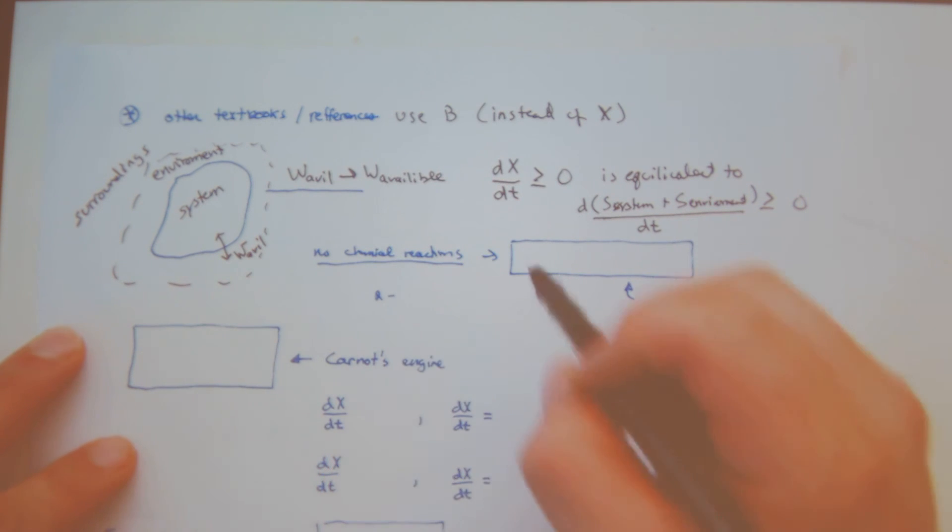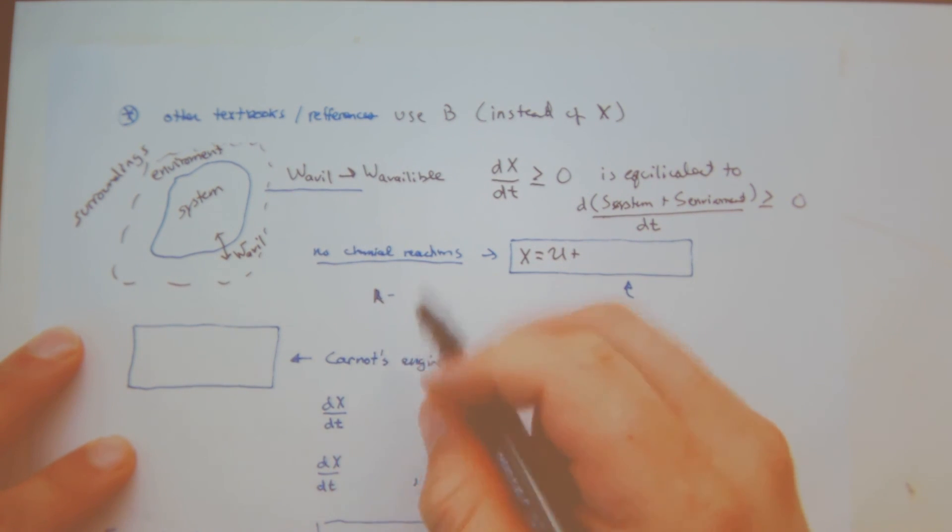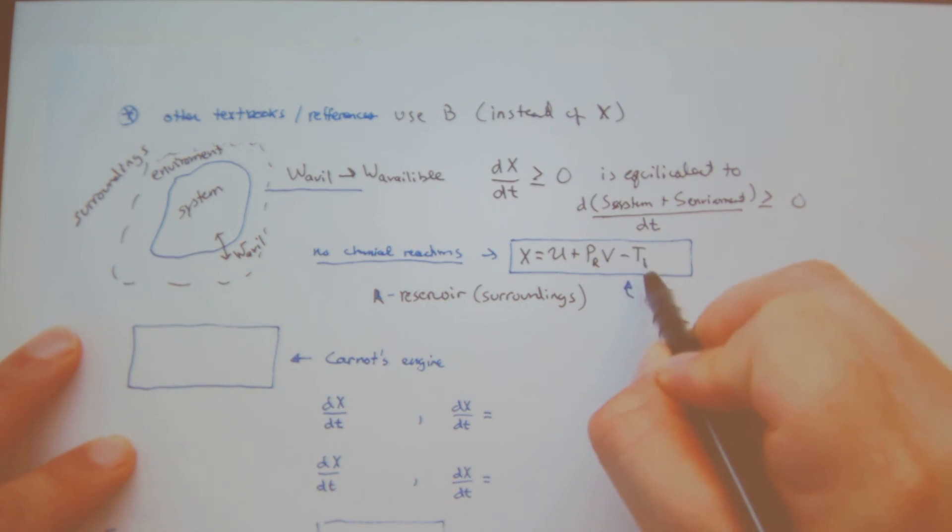So related to, let's get rid of chemical reactions and let's write out again our exergy relationship. So X is equal to U. And then now let's consider R, which is a reservoir or surroundings. And so now I have my exergy is equal to U plus the pressure of the reservoir times the volume minus the temperature of my reservoir times the entropy. And this is my thermal mechanical exergy.